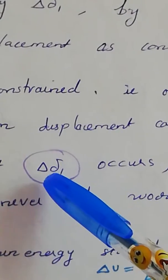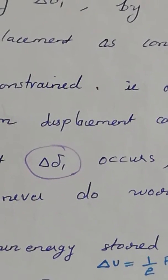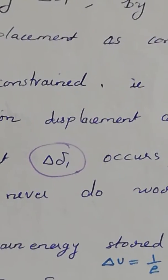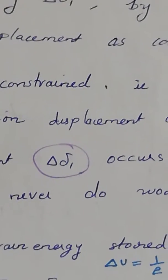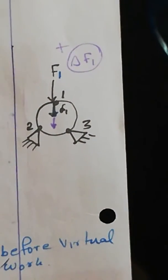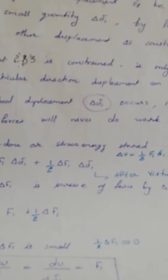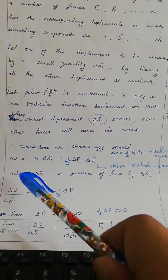This displacement can be indicated by delta-delta-1. As we know from Hooke's law, all displacements are proportional to the forces that produce them. So if there is a new displacement delta-delta-1, there will be a corresponding new force delta-F1. Now we can calculate the total strain energy stored.